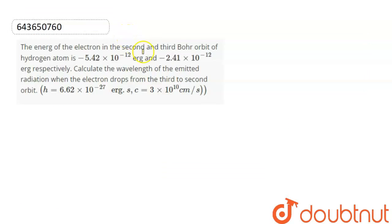Given question is, you have asked a question. The energy of an electron in second and third Bohr orbit of hydrogen atom is minus 5.4 times 10 to power minus 12 and minus 2.4 times 10 to power minus 12. We can calculate the wavelength of emitted radiation when the electron drops from the third to second orbit.